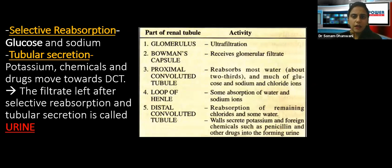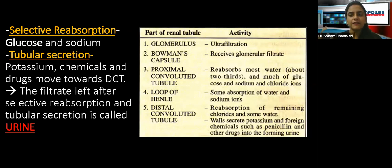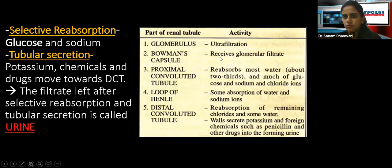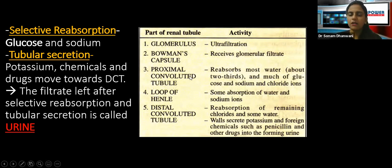The next step is selective reabsorption. Whatever the body needs — solutes, minerals — is reabsorbed, which is why we call it selective reabsorption. The proximal convoluted tubule, or PCT, reabsorbs most of the water, much of the glucose, and sodium and chloride ions. All the important ions and majorly glucose are reabsorbed by the PCT.